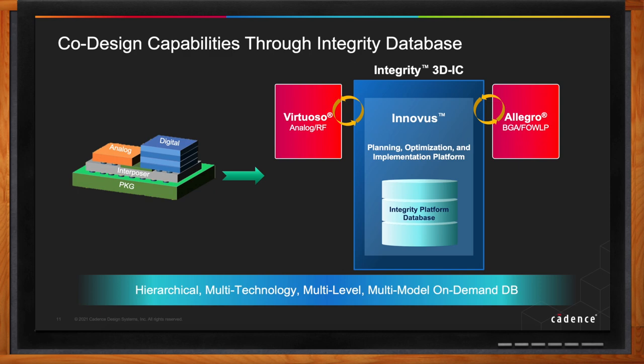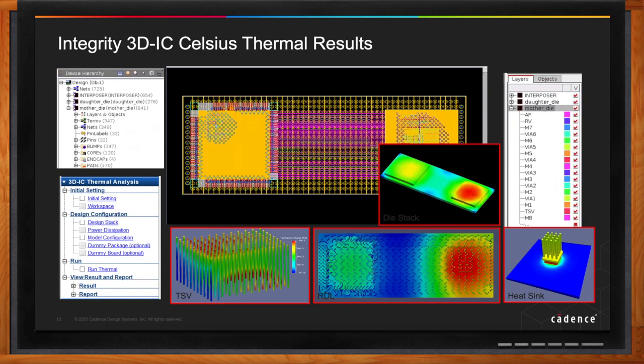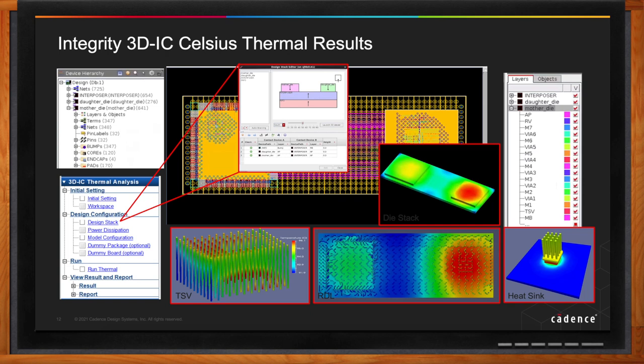One of the key additional verifications needed for 3D IC designs is the thermal checks — that is really something that a 3D IC system cannot be completed without. Cadence has a thermal analysis tool called Celsius, which uses a combination of FEA — finite element analysis — and CFD, computational fluid dynamics, for a much more predictable, realistic, and accurate temperature calculation for different systems.